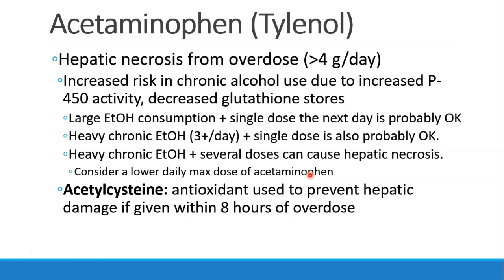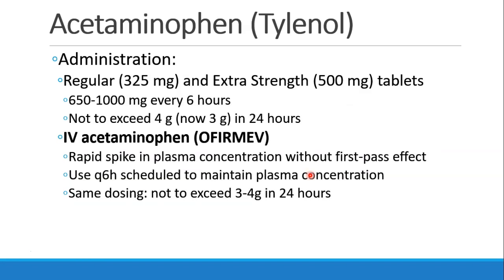The treatment for acetaminophen overdose is acetylcysteine, an antioxidant used to prevent hepatic damage if given within 8 hours of the overdose. Acetaminophen is available orally as regular (325 mg) and extra strength (500 mg). Recommended dose is 650 to 1,000 milligrams every 6 hours, not to exceed 4 grams in 24 hours — now they recommend 3 grams in 24 hours to further avoid hepatic injury. We also have IV acetaminophen called Ofirmev, which rapidly increases plasma and CNS concentrations without any first-pass effect. It's dosed at 650 to 1,000 milligrams every 6 hours, but since there's no first-pass effect, CNS levels will be much higher than with oral administration.